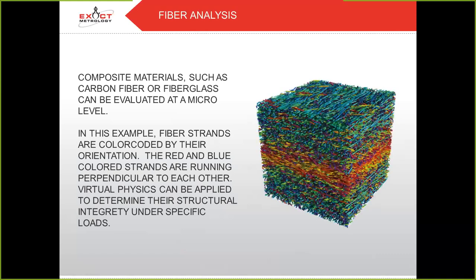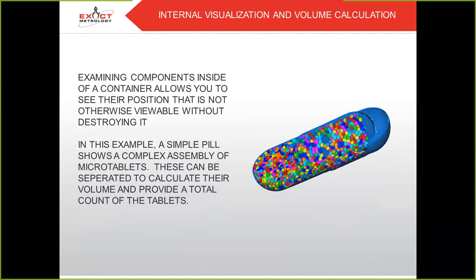In fiber analysis, composite materials such as carbon fiber or fiberglass can be evaluated at the micro level. Fiber strands are color coded by their orientation — the red and blue colored strands are running perpendicular to each other. Virtual physics can be applied to determine their structural integrity under specific loads. Examining components inside a container allows you to see their position without destroying it. For example, a simple pill showing a complex assembly of microtablets — these can be separated to calculate their volume and provide a total count of the tablets.